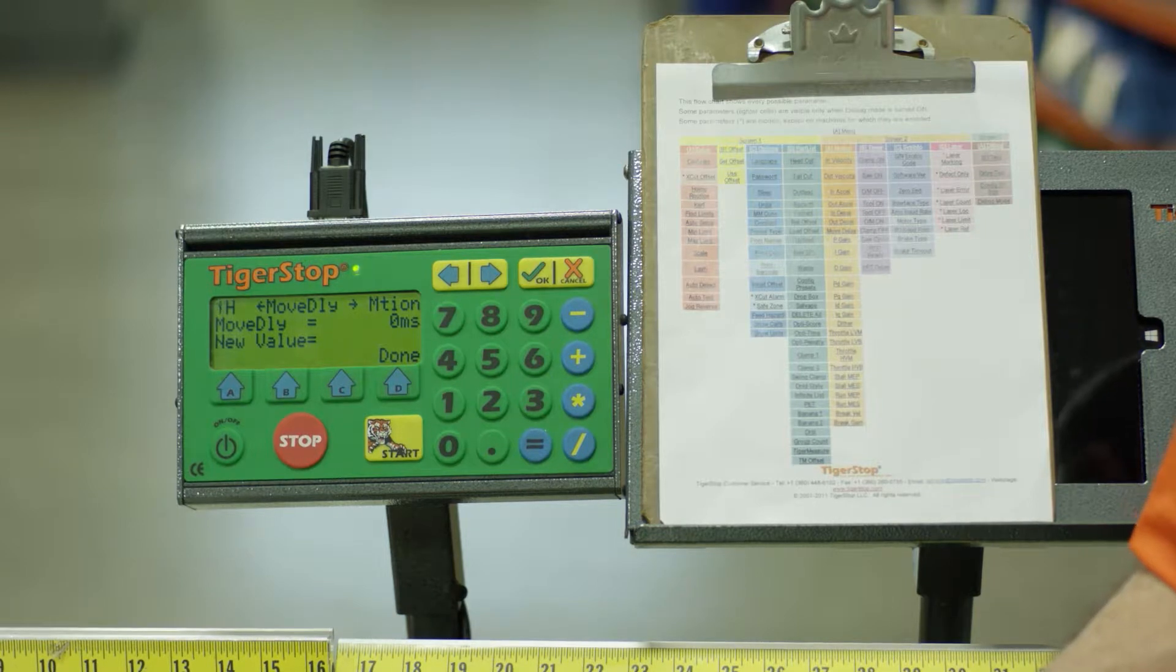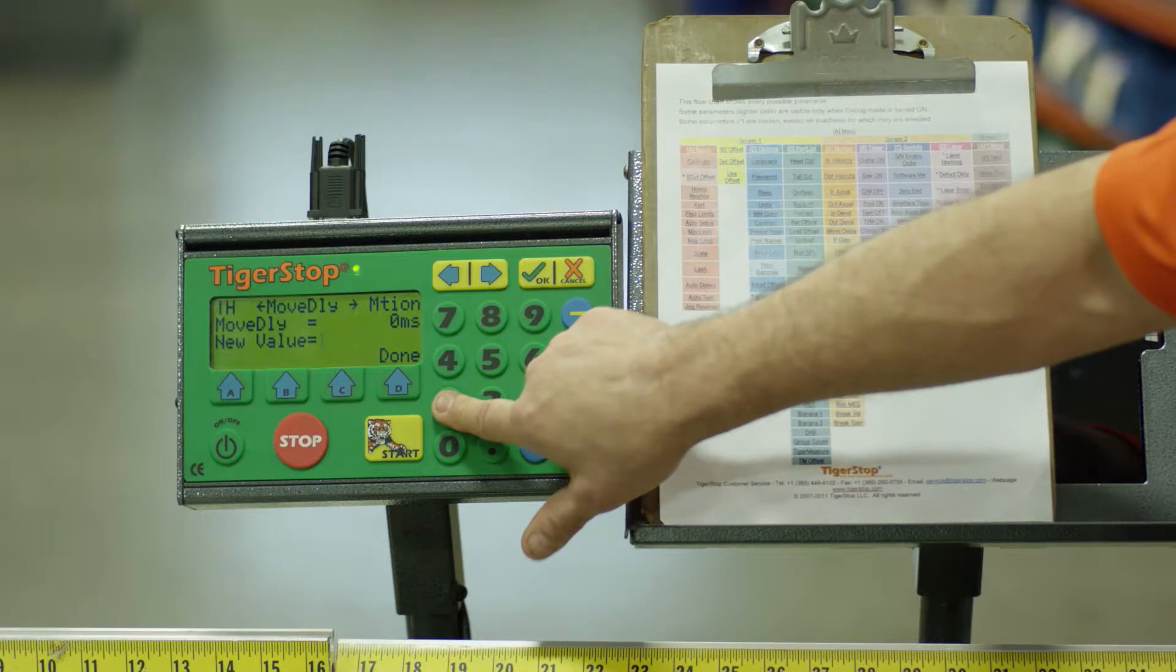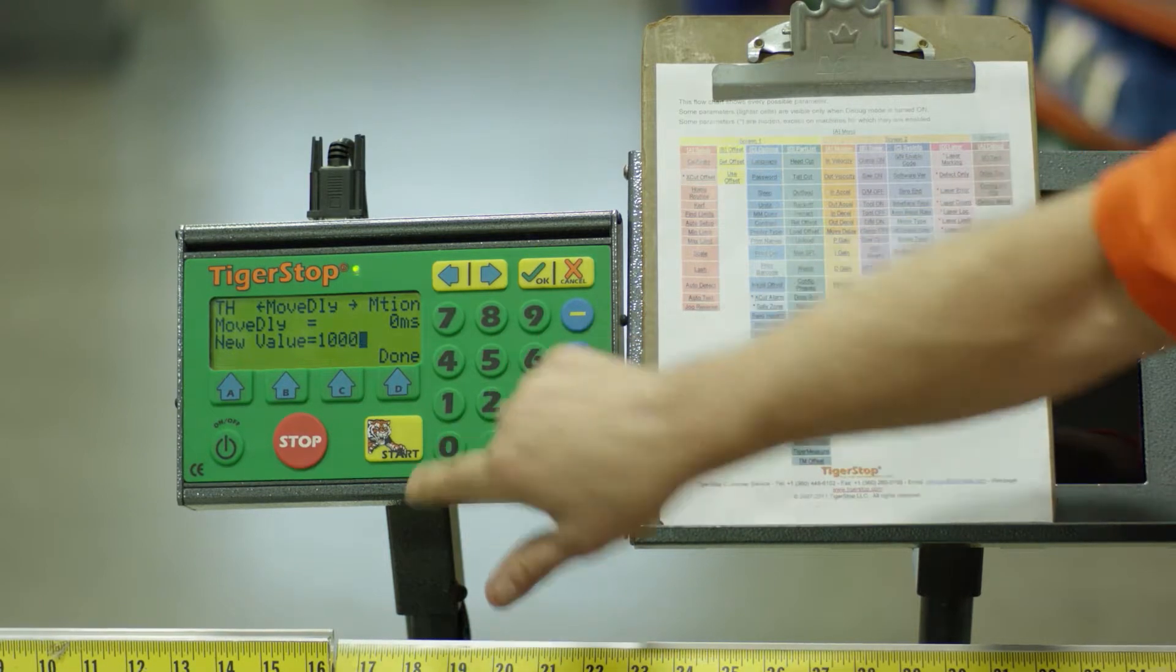When I look at my application, or you have yours, you may want to delay it a half a second, one second. This can have a delay of up to 20 seconds. We're going to go ahead and put a move delay of one second. One second would be entered as 1000 milliseconds.